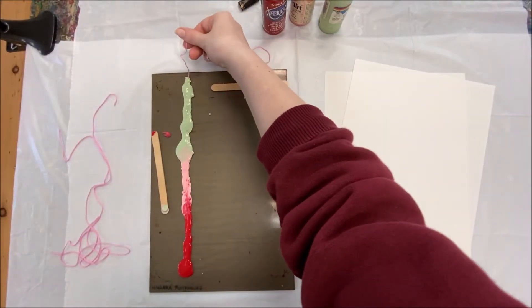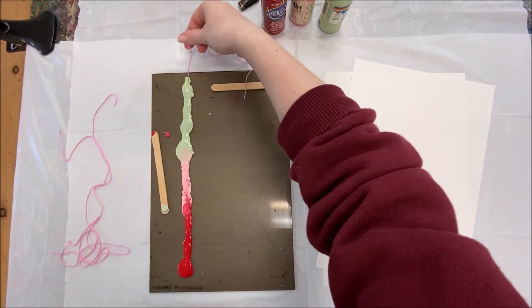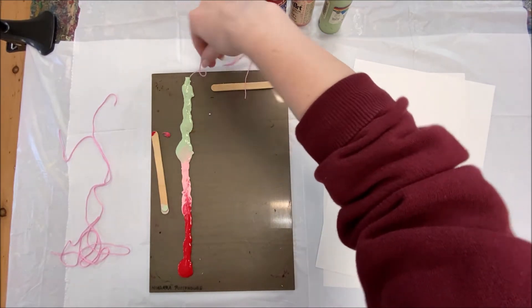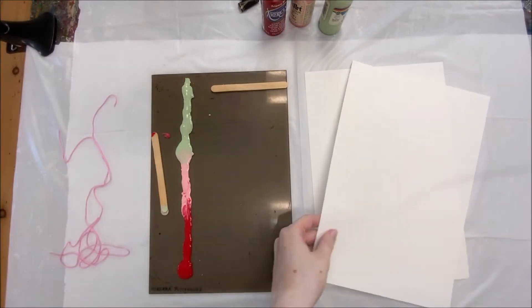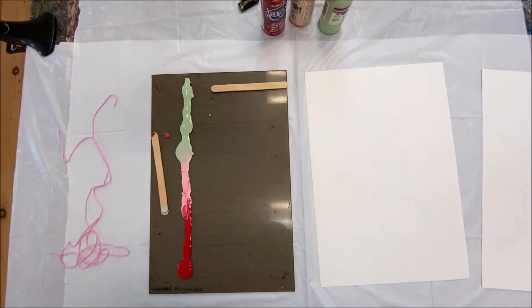Once you're sure that your string is covered completely in paint, we're going to carefully lift it up like this. On our first piece of paper, we're going to lay the string out, leaving lots of twists and curves behind.